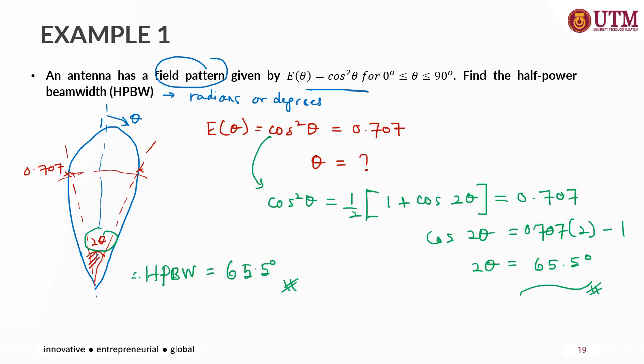Since the question asks for HPBW, you need to use 2θ. If the question only asks for θ, then you need to divide by 2.